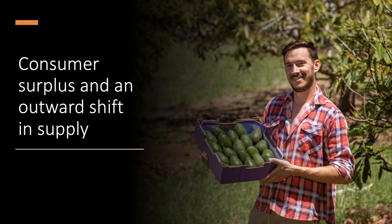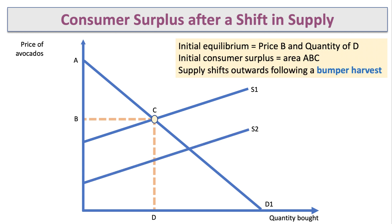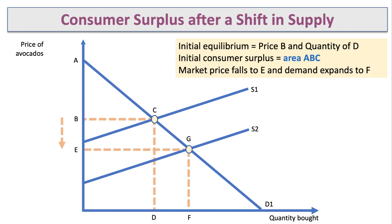What about the effect on consumer surplus of an increase in supply? Take the market for avocados. The original equilibrium is at point C, price B, quantity D, and consumer surplus is area ABC. Now assume there's a bumper harvest — supply shifts out from S1 to S2. The price comes down to equilibrium G, price E, and quantity goes up to F.